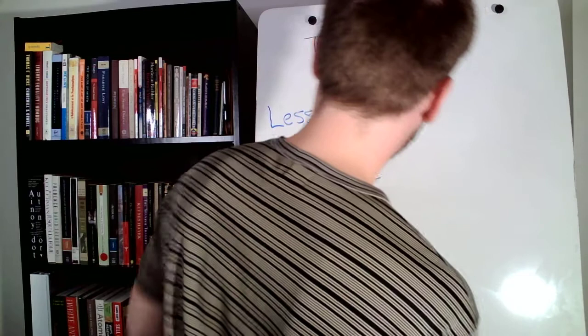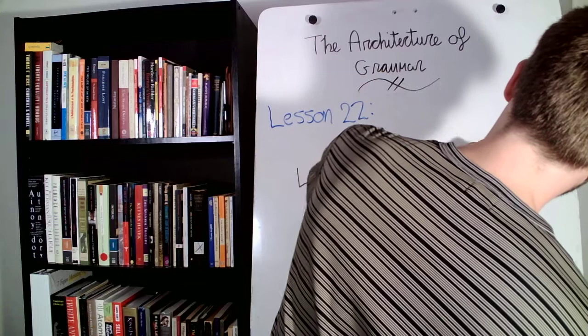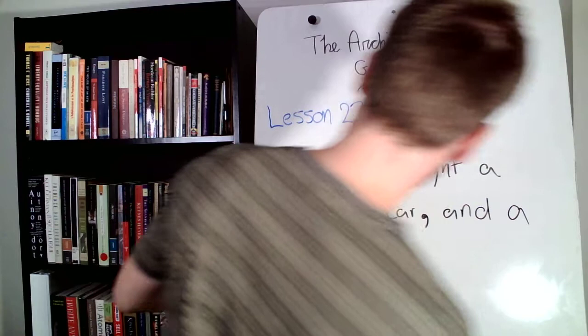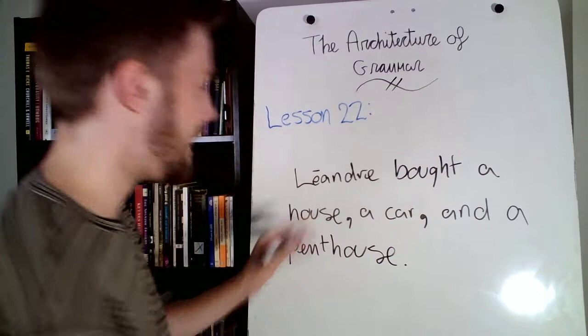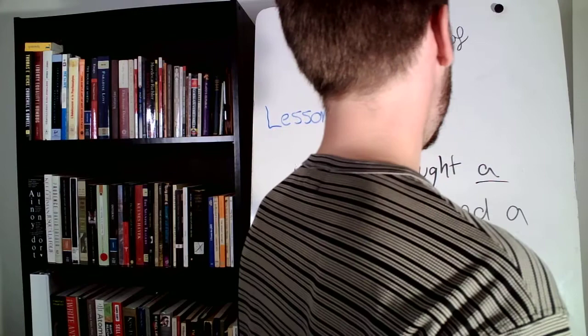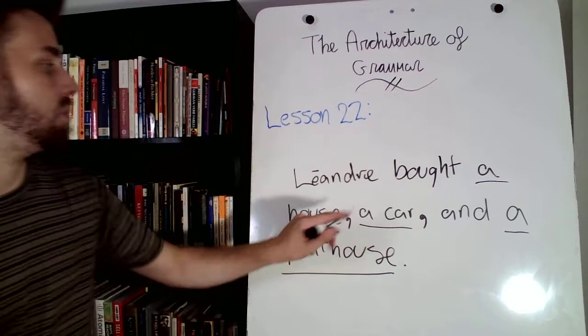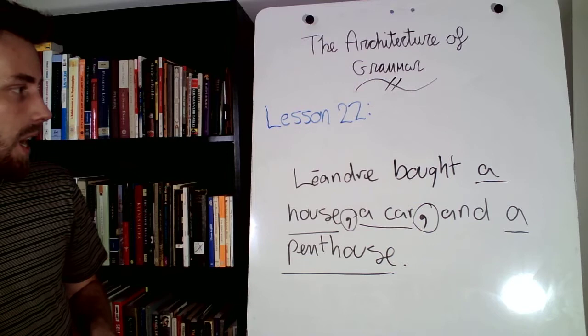So, let's say, León bought a house, a car, and a penthouse. So, this is a list. So, a house, a car, and a penthouse. So, here we've got the commas that separate these elements in the list. So, the list is a house, a car, and a penthouse. And, we have the commas here that we are using. Now, here's the thing.